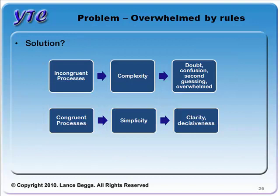So as it currently stands, we have incongruent processes — visual and rule-based — creating complexity, leading to doubt, confusion, second-guessing, and a general feeling of being overwhelmed. If that's you, then I'm hoping that a change to more congruent processes — visual in both cases for past price action analysis and future path assessment — should lead to increased simplicity, which will hopefully lead to increased clarity and decisiveness, which is so important in trading.